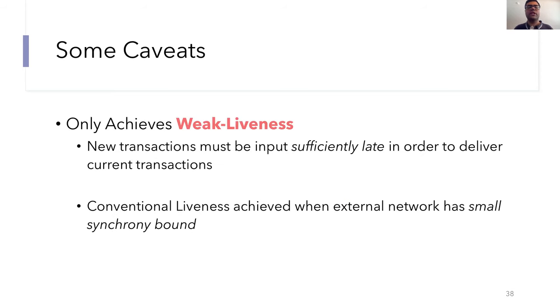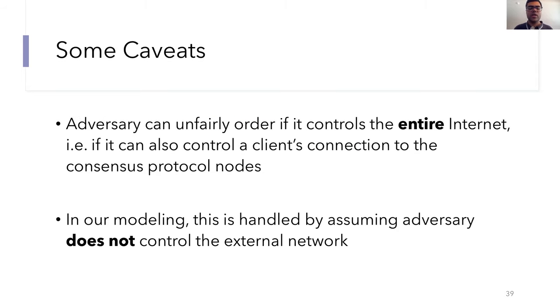I'll also briefly mention some caveats. Our protocol only achieves a weaker form of liveness, which informally will require that new transactions are input sufficiently late in order to deliver current transactions. But this should be reasonable in practice. We also achieve conventional liveness when the external network has a small synchrony bound. Another point to note is that the adversary can always unfairly order if it controls the whole internet, for example, if it controls the client's access to all of the consensus nodes. And in our modeling, we sidestep this by assuming that the adversary does not control the external network.